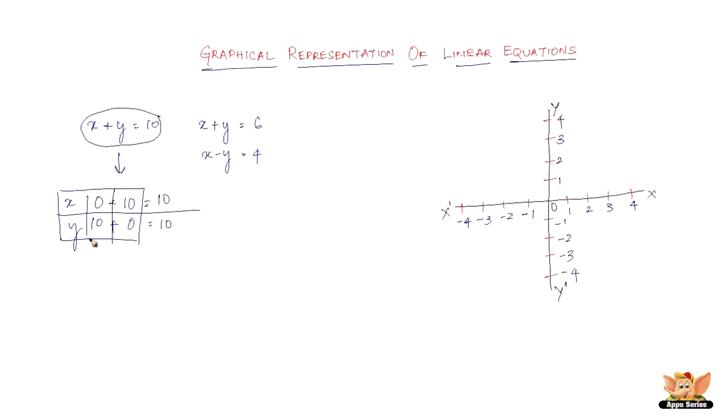Now how do you represent this on a graph? The values that satisfy any linear equation are points on a graph paper with respect to the two coordinates, the x and y axes. If this is one value (0 comma 10), then plot it here: x is 0 and y is 10.